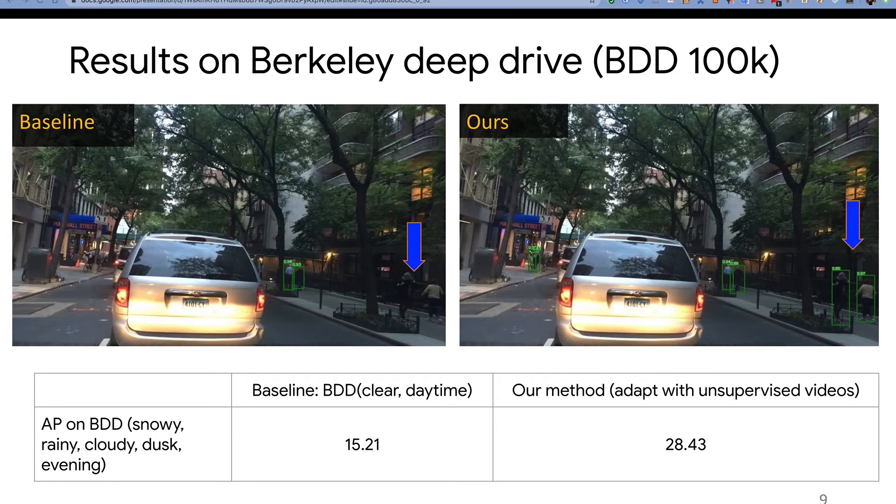We test our model on Berkeley Deep Drive, called BDD 100K dataset. We use clean daytime images for training, and use snowy, rainy, cloudy, dusk data for out-of-domain testing. The baseline was trained from clean daytime dataset, and our method is adapted using unsupervised videos. When testing on out-of-domain, our method improved average precision from 15.21% to more than 28%.